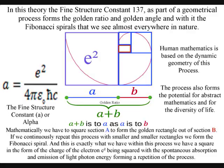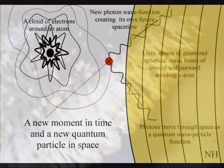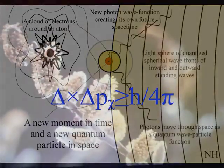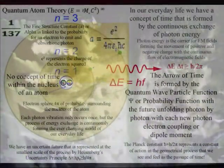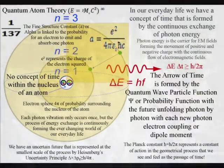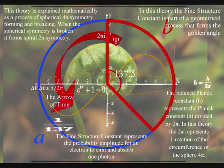And this is exactly what we have within this process. We have a square in the form of the charge of the electron being squared, with the spontaneous absorption and emission of light photon energy forming a repetition of the process. In this theory, the fine structure constant, as part of a geometrical process, forms the golden angle and with it the Fibonacci spiral that we see almost everywhere in nature.